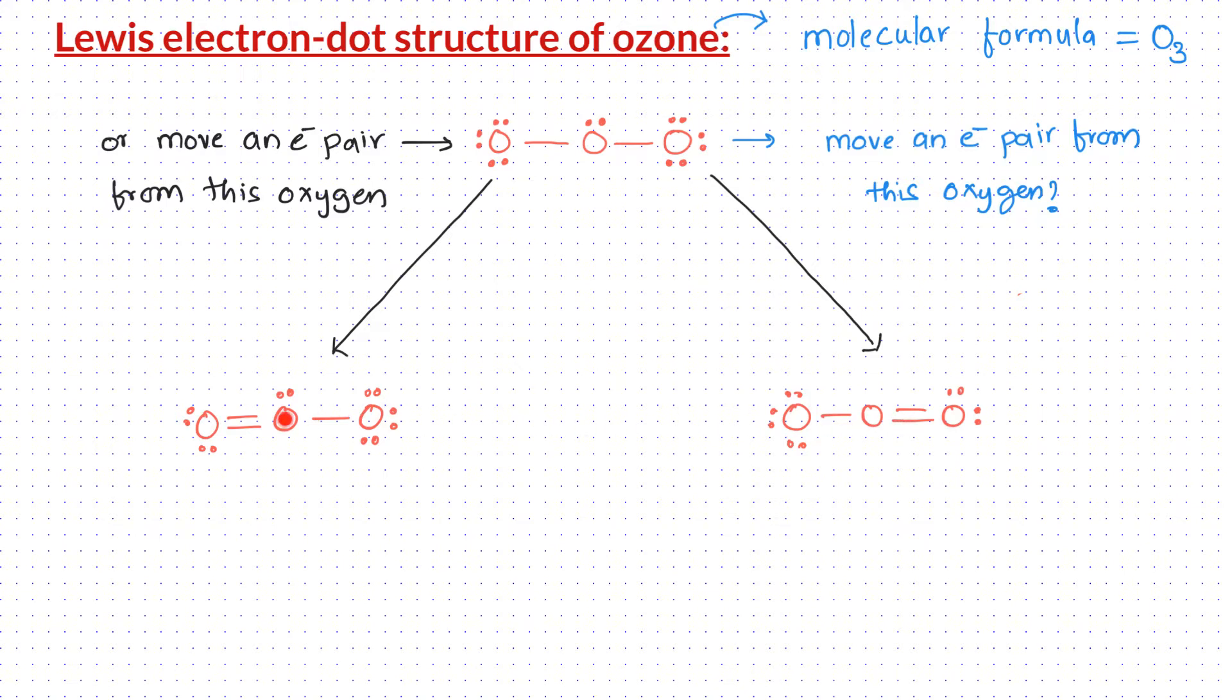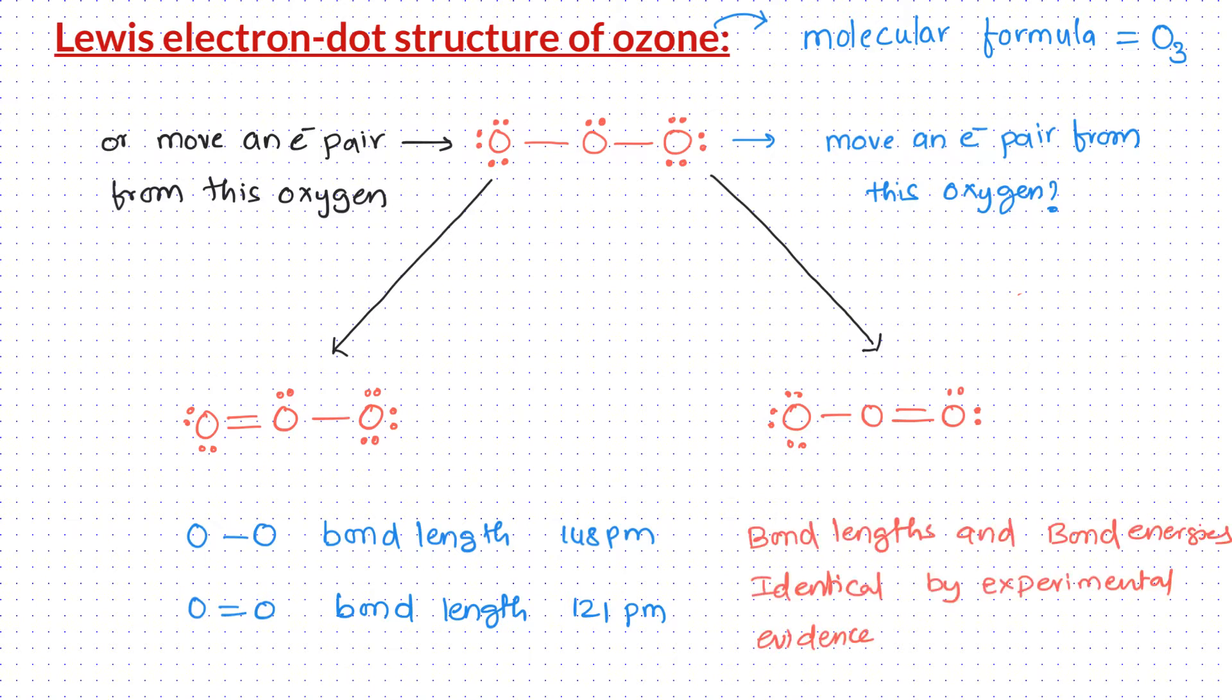These are both reasonable Lewis dot structures for the same molecule. However, neither of the structures is an accurate depiction of ozone. The normal oxygen-oxygen single bond measures 148 picometers and oxygen-oxygen double bond measures 121 picometers. So you would expect the ozone molecule to have 2 different bond lengths and 2 different bond energies. In reality, the oxygen-oxygen bond lengths in ozone are identical at 128 picometers and the bond energies are also identical. These experimental values cannot be explained by either of the two Lewis dot structures. Therefore, we use a concept called resonance to explain these experimental observations.